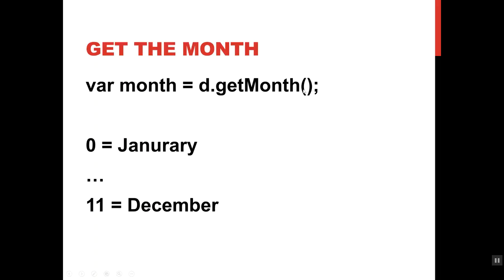If you call d.getMonth(), it will give you the month back as a number. The numbering starts at zero, like most things in computer science—zero is January, one is February, two is March, etc.